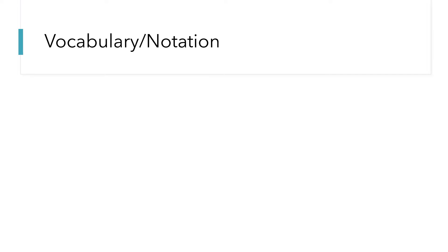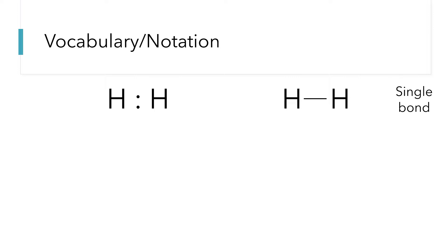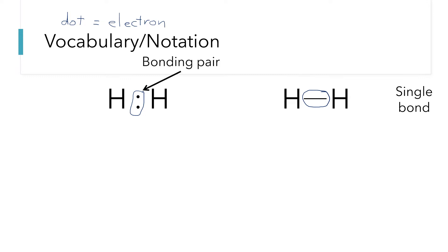To start with some of the notation and vocabulary, let's take a look at a very simple molecule: hydrogen, H₂. These two structures drawn here are two equivalent ways of representing how a hydrogen atom bonds with another hydrogen atom. In the structure on the left, we are showing two dots in between the two hydrogen atoms, representing a shared pair of electrons — each dot is equal to one electron.